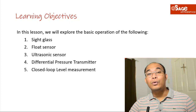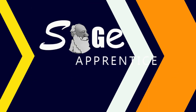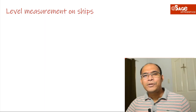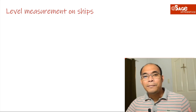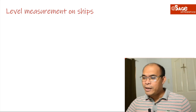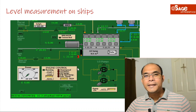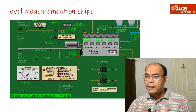At the last part of our discussion, we will take a look at how these level measuring devices are incorporated in a closed loop control system. Before we proceed, let us first look at how these level measuring devices are integrated in the industry or on board a ship. A common example found in the engine room simulator is the diesel generator.